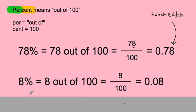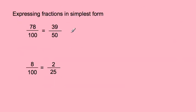For example, 8% reads as 8 out of 100, or 8 over 100. The 8 is in the hundredths place — not the tenths place, which would make it 80 hundredths. It's in the hundredths place already, and that's a key part of the lesson. We'll also express fractions in simplest form: 78 over 100 equals 39 over 50, and 8 over 100 reduces to 2 over 25.